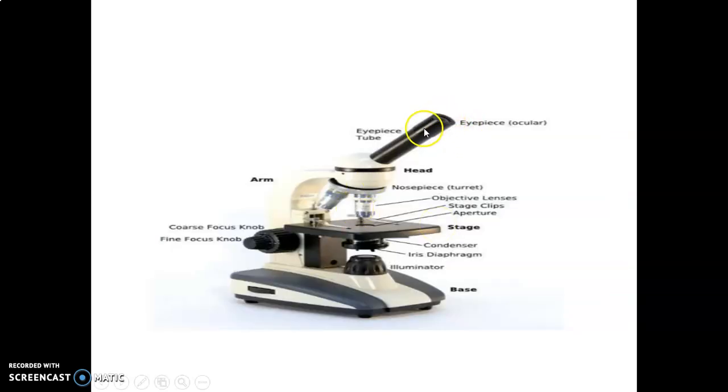This is your eyepiece, this is your tube, that's the arm, your coarse adjustment and fine adjustment knob. This is the base, this is the light source. There's a diaphragm here to regulate the amount of light passing through the aperture. There's a condenser that will focus the light rays onto the stage. This is your stage here. You have your clips, and the stage has an aperture that will allow light. These are objective lenses and the revolving nosepiece holding the lenses.